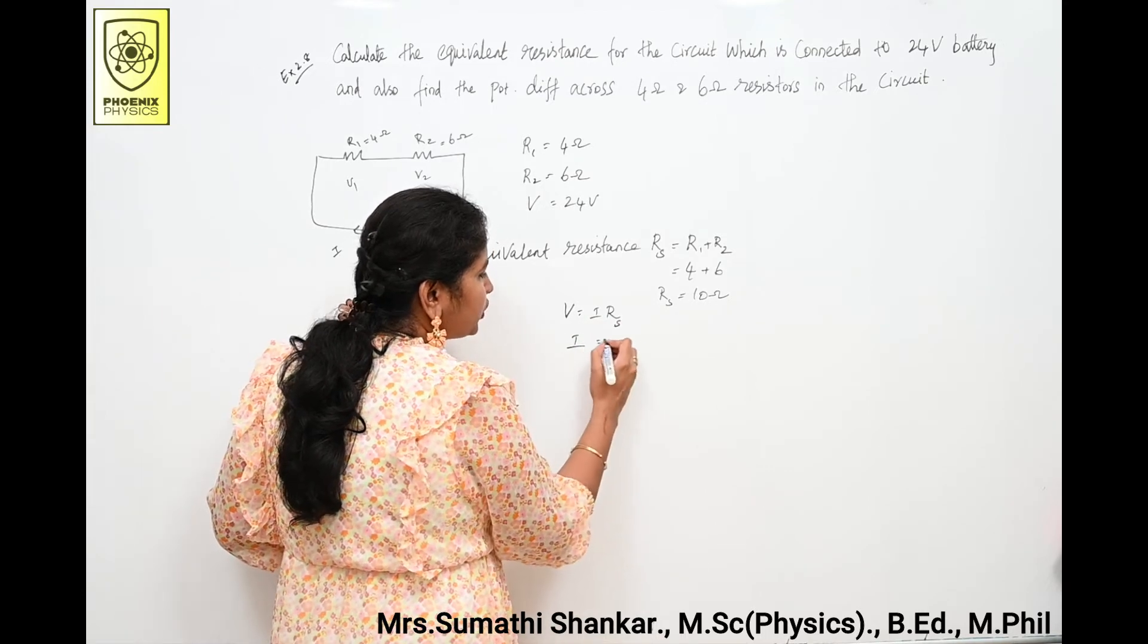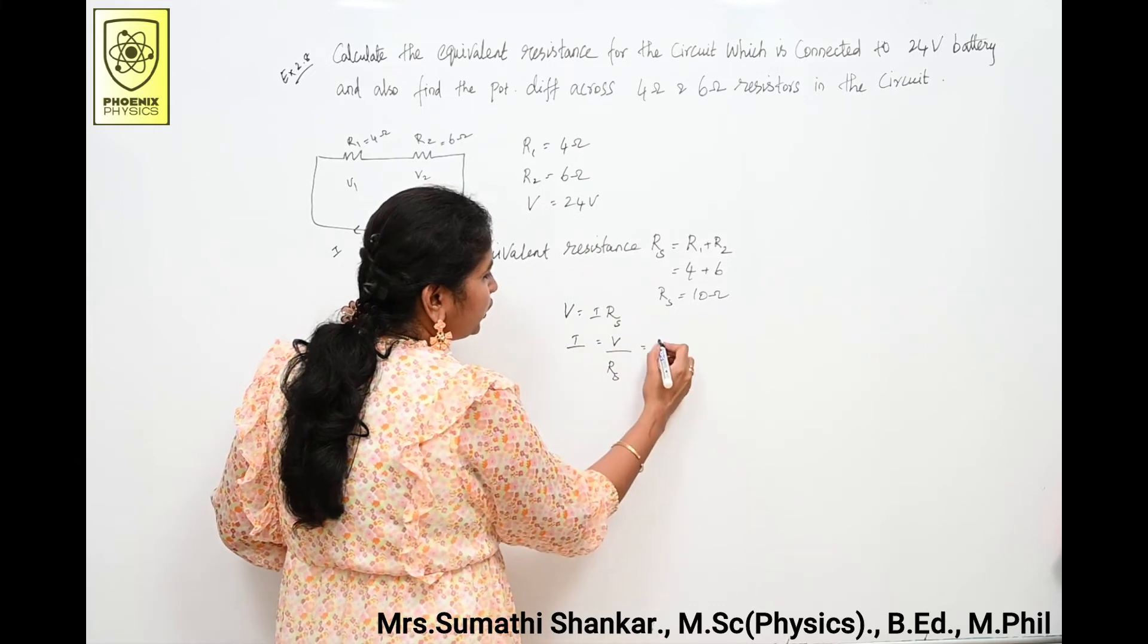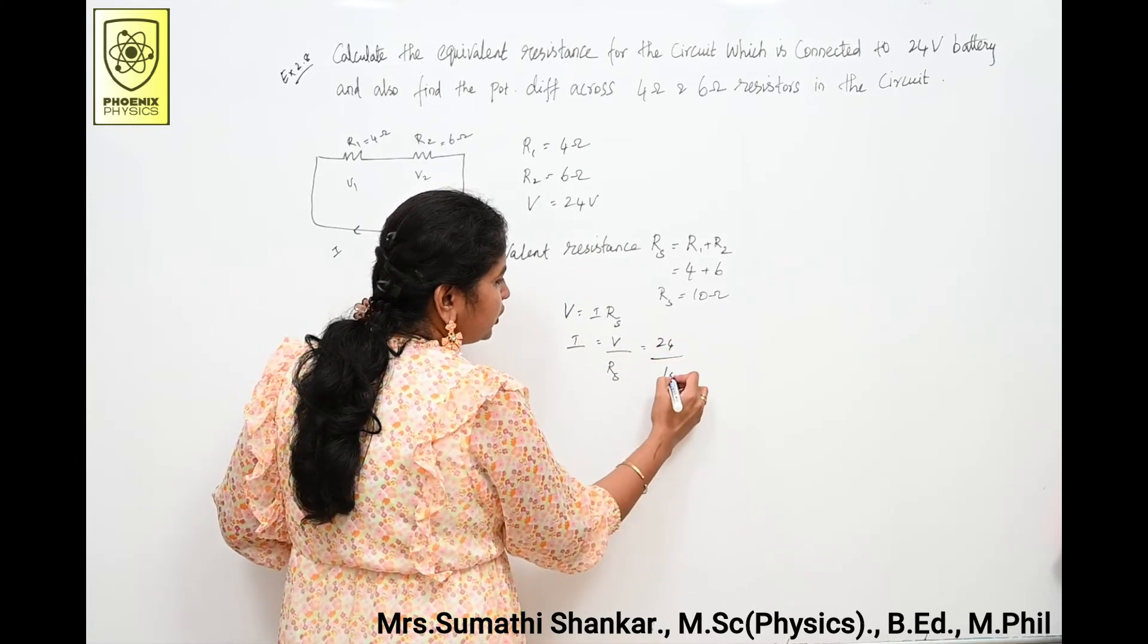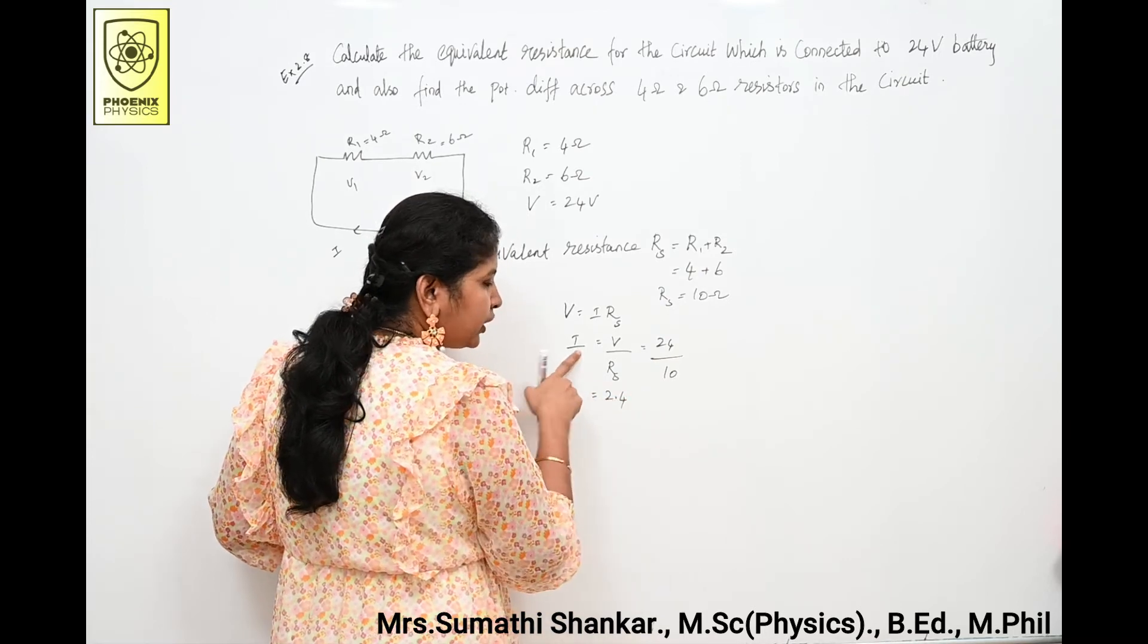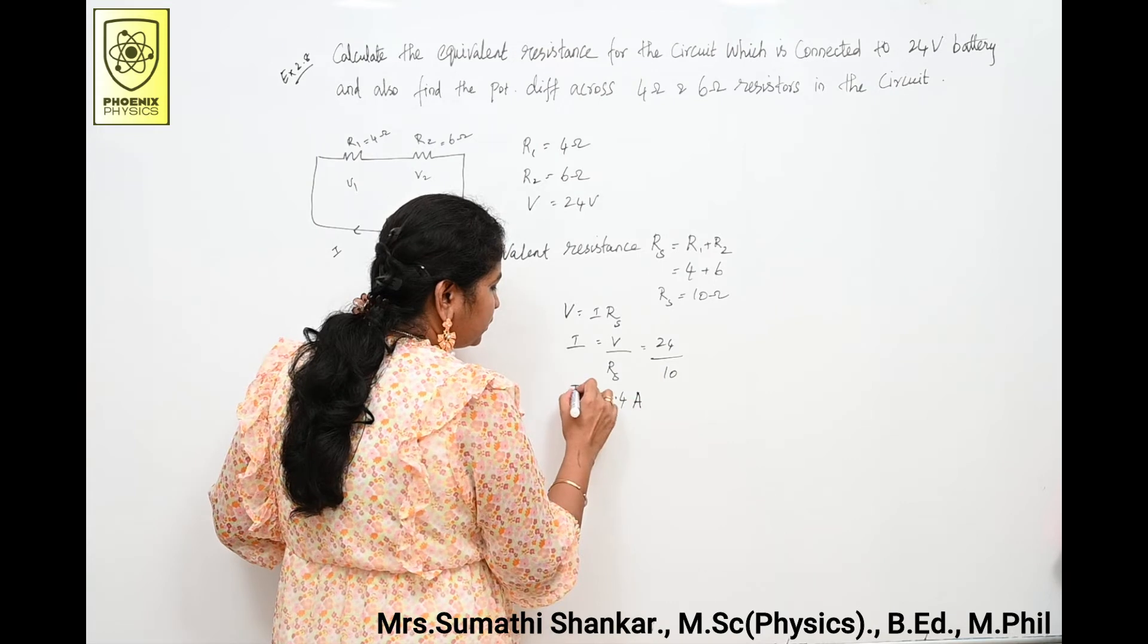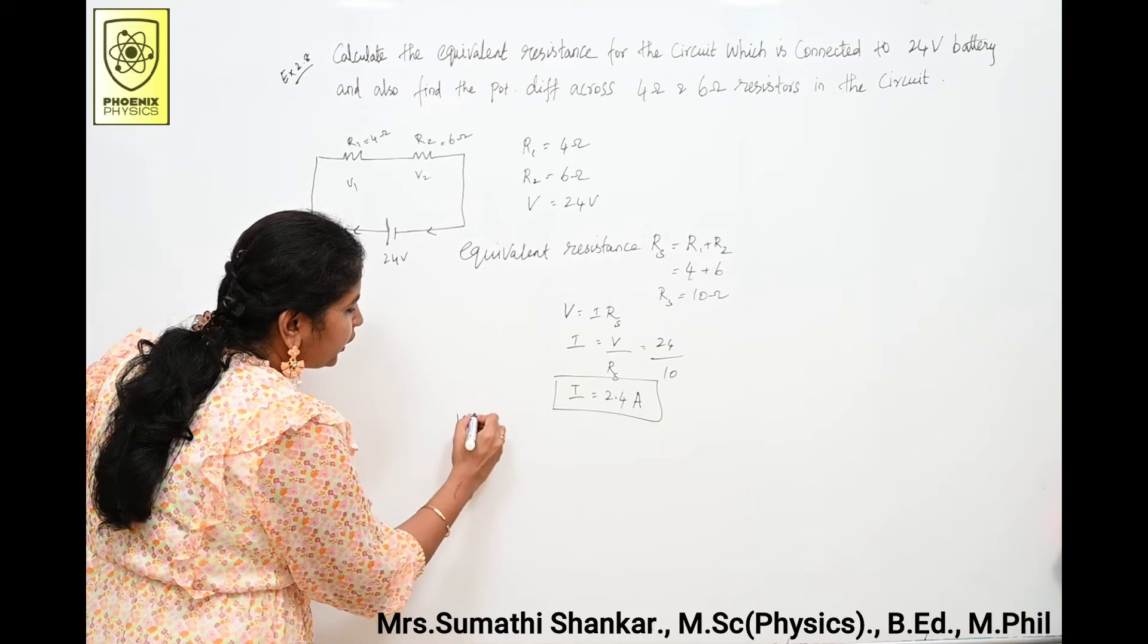the current value? I is equal to V by Rs. V value you know is 24, Rs is 10, so I value is 2.4. SI unit for current is ampere. This is I value. Next we are going to calculate voltage